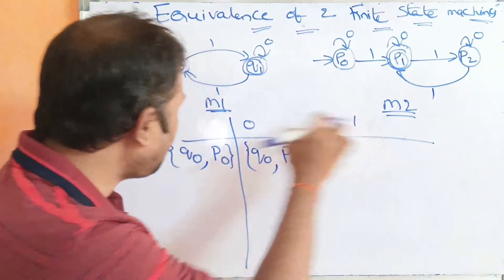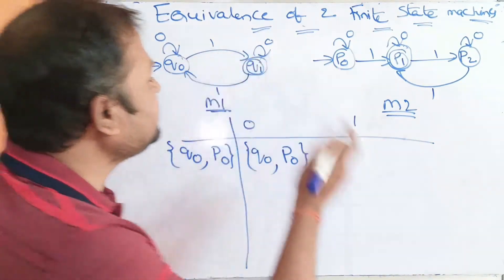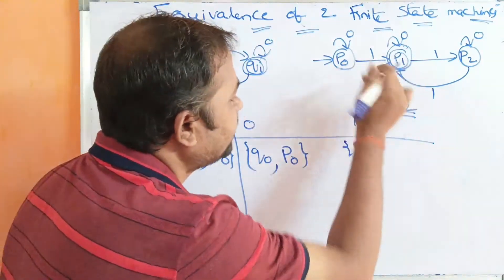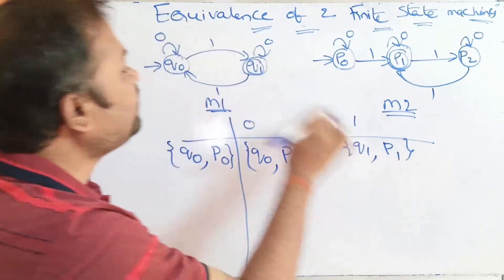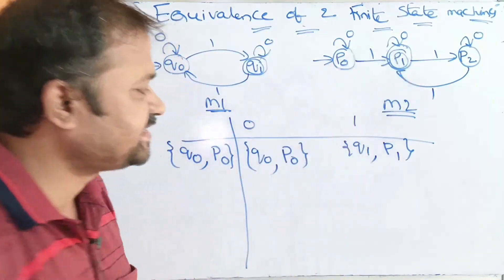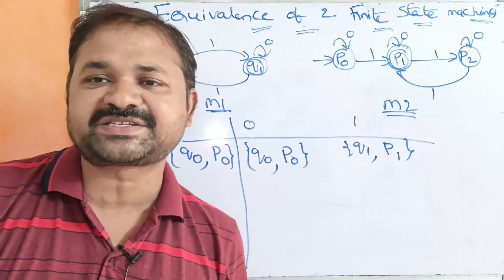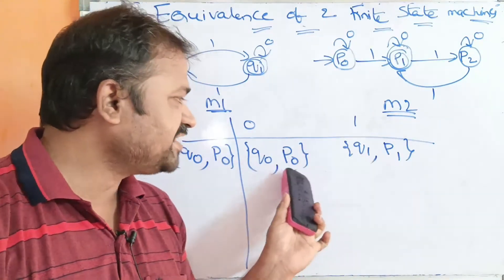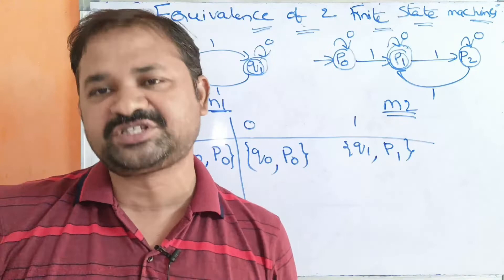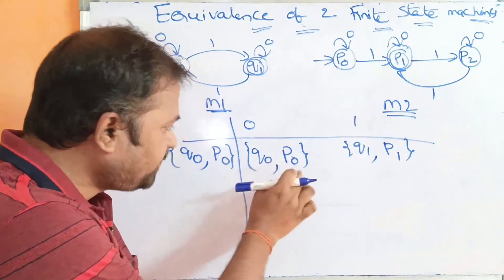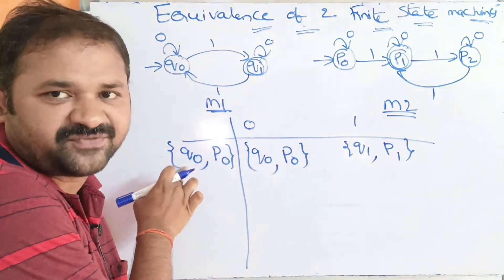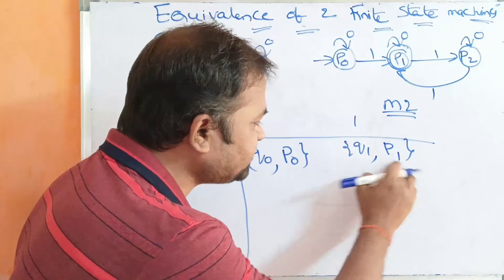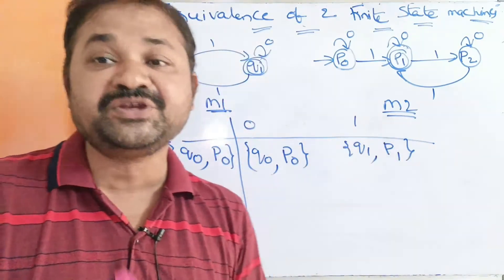Now let us apply input 1 on Q0 and P0. Q0 on 1 gives Q1, and P0 on 1 gives P1. Q1 is a final state and P1 is a final state, so the pair contains both states as final states — there is no problem. Now we check whether these states are new or already processed. Q0, P0 is already processed (bold state). Q1, P1 is a new state.